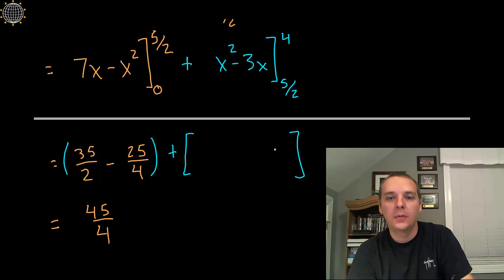Okay, let's plug in a 4. 4 squared is 16, 4 times 3 is 12, 16 minus 12 is 4. And then we're going to subtract...